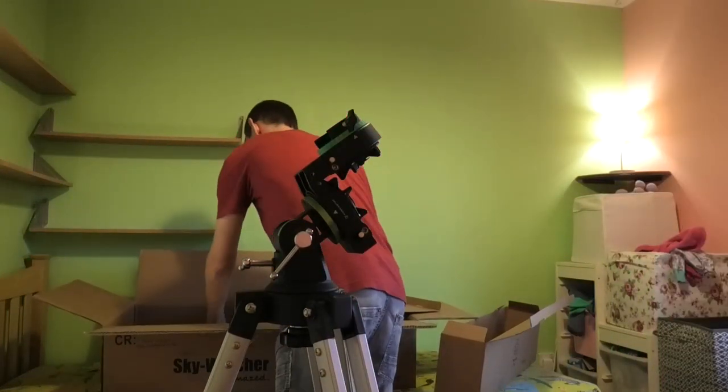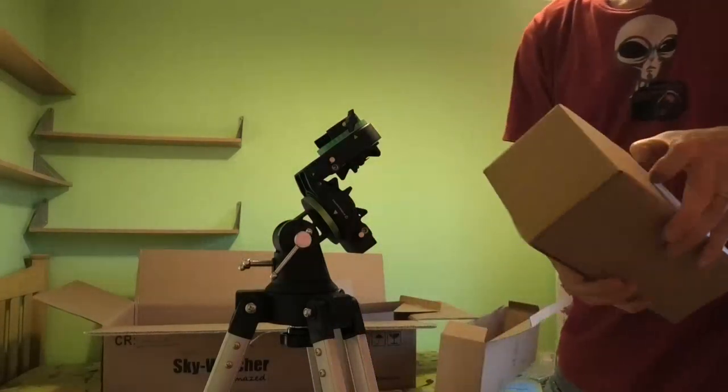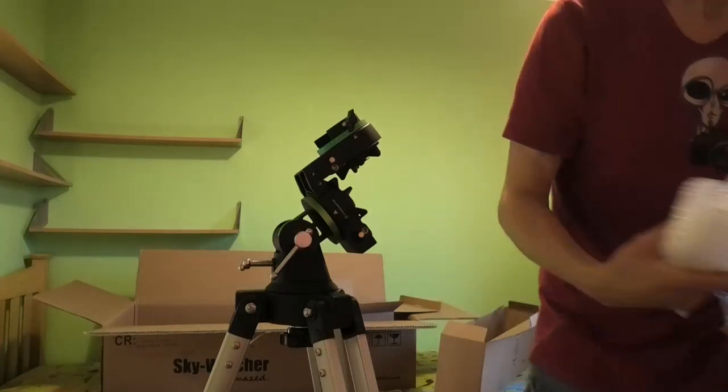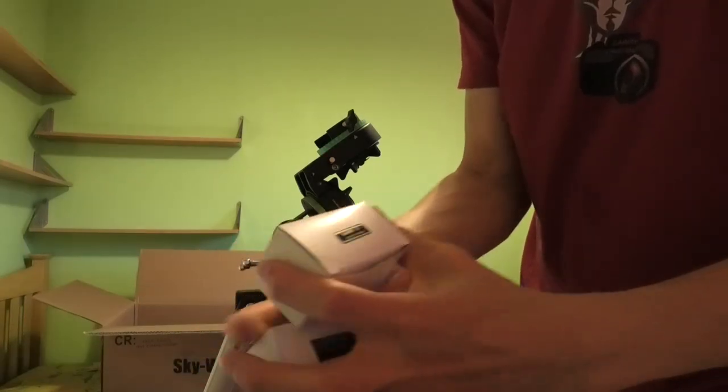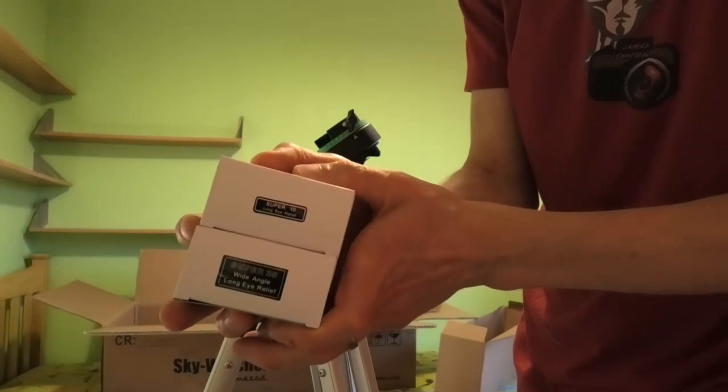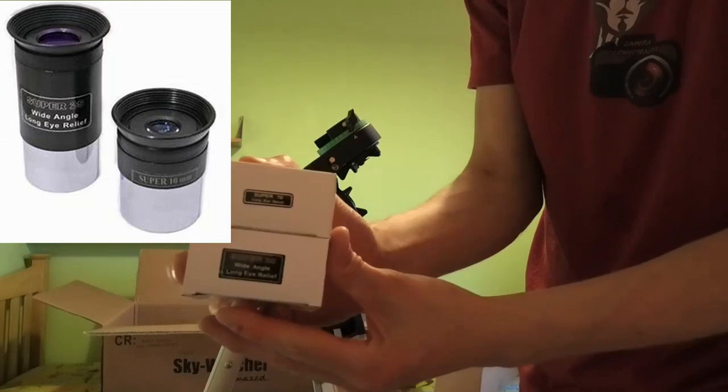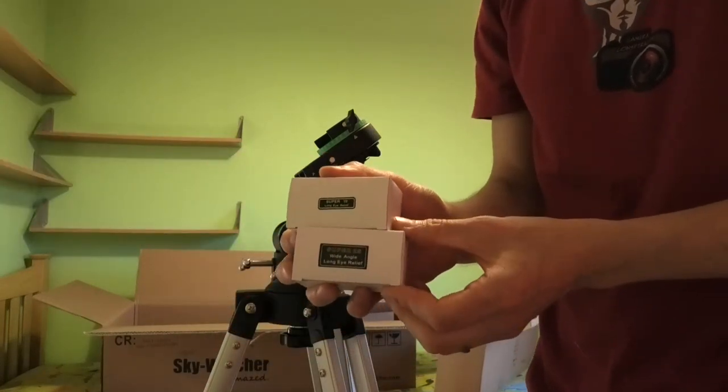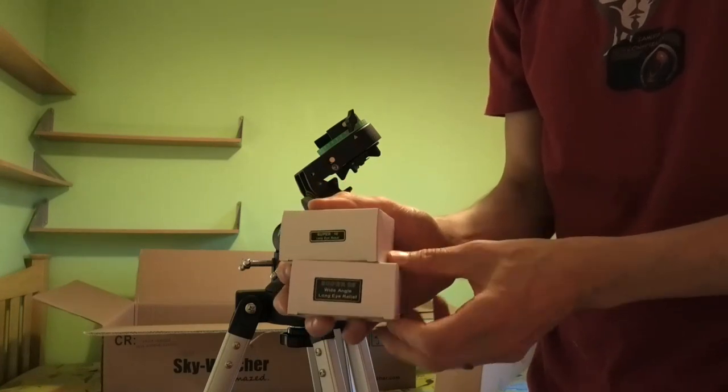Let's get some more boxes open. I think it might only be this box that's got stuff in it left. Very typically for Sky-Watcher telescopes, you get these two modified Plossl eyepieces. One's a 10mm Super 10 and the other one's a Super 25mm. So these give 26 and 65 times magnification at 650mm focal length.